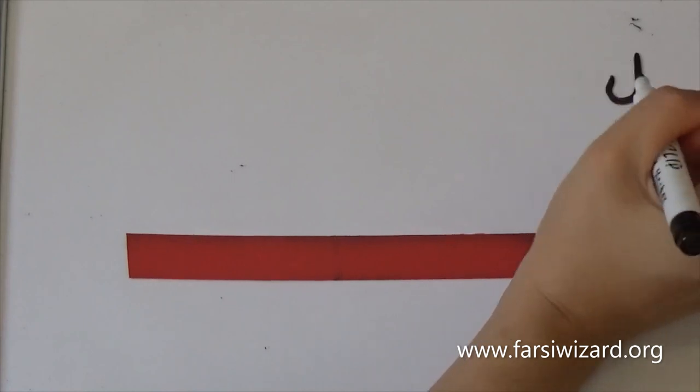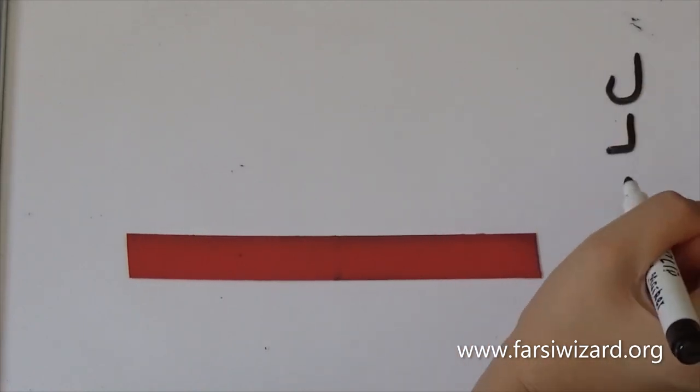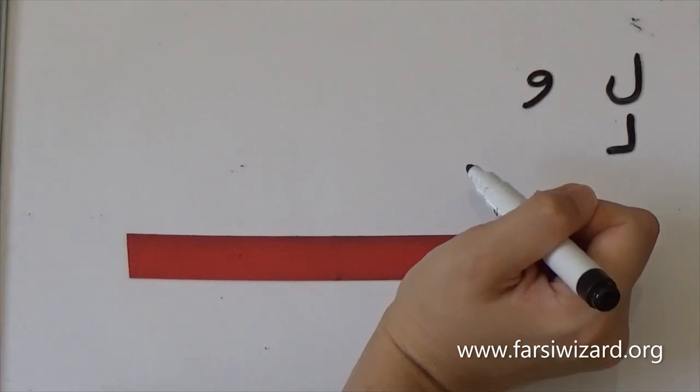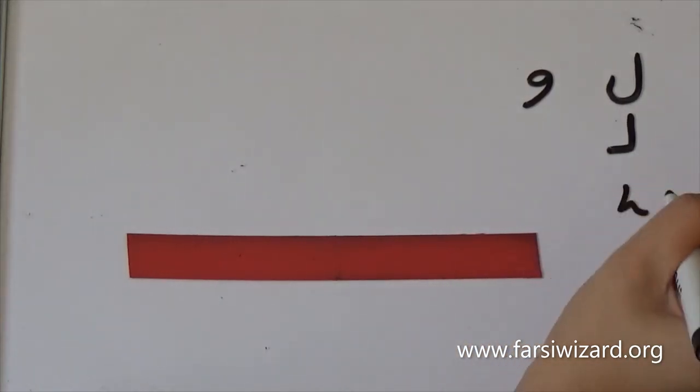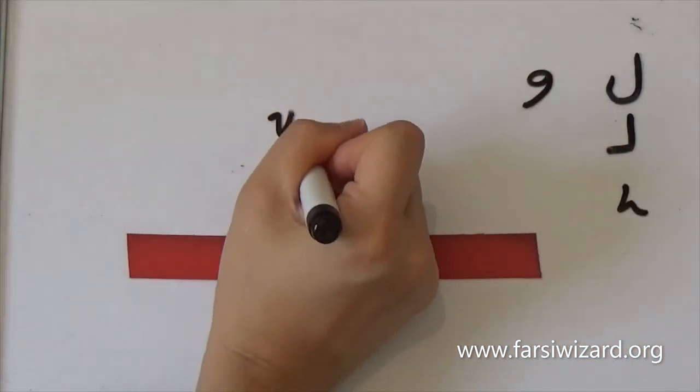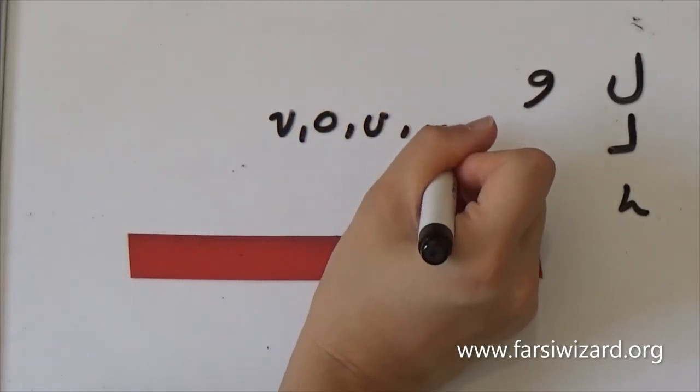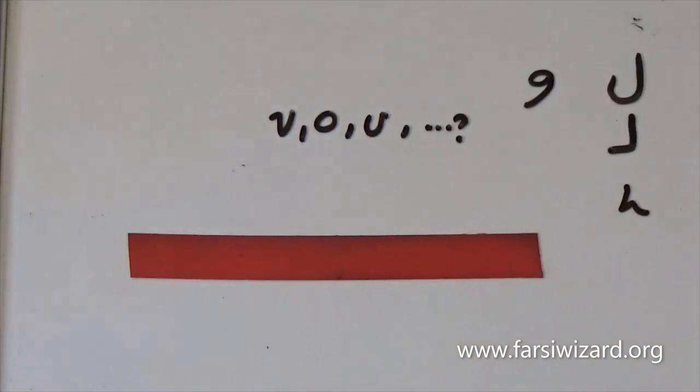So let's just quickly review what we learned today. Lam and vav. So lam was the equivalent of L in English. Vav the equivalent of V, O, U and couple of other things including it can be written but not pronounced. So it can be basically mute.